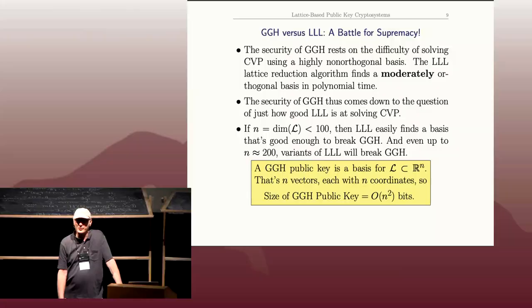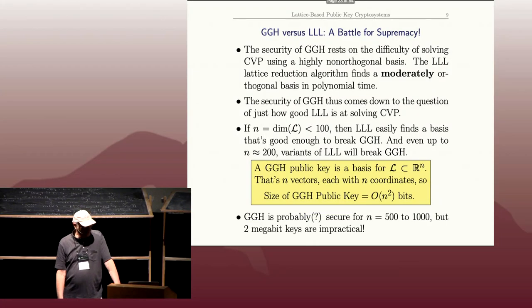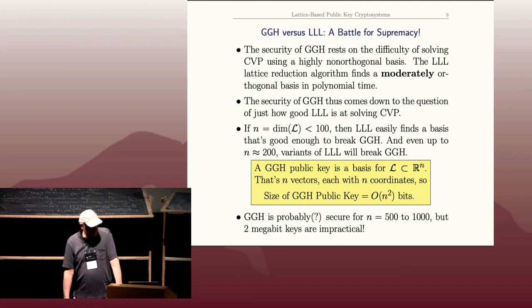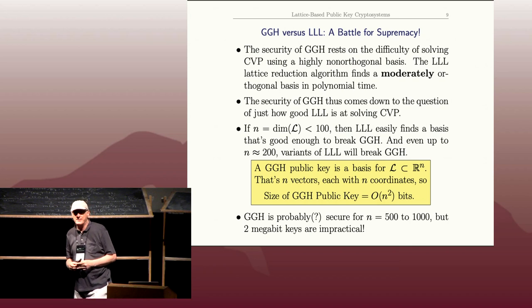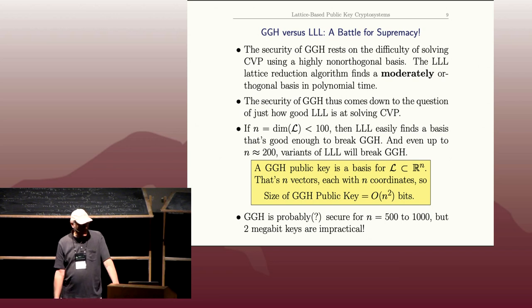n is going to be at least 200 if you want to be secure. If you really want to say 500 to 1000, you're going to have keys in the megabit size. I say two-megabit keys are impractical—I shouldn't really make a definitive statement like that. There may be situations where having keys that are megabits long is fine; it depends on how much storage and bandwidth you have.